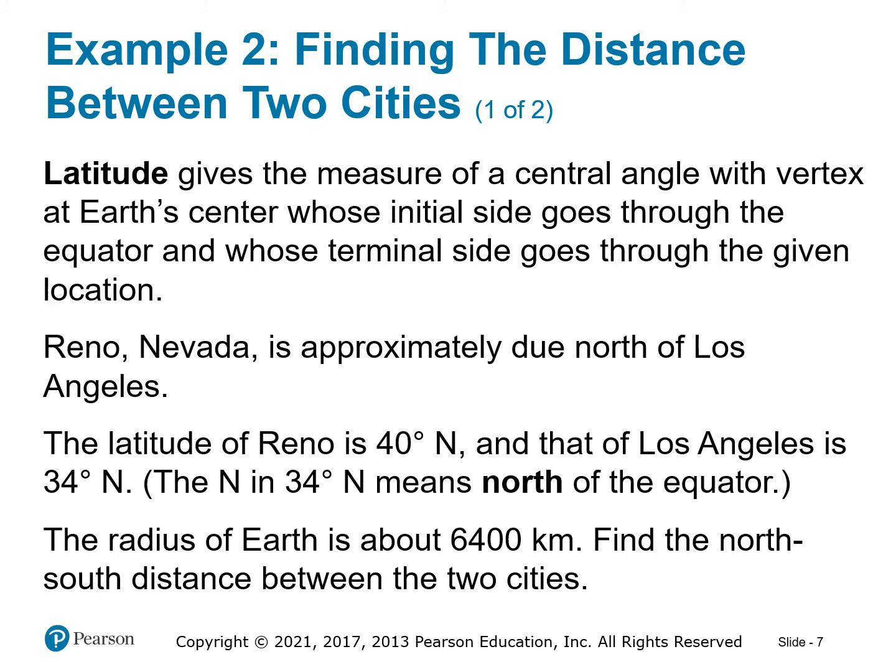An interesting application: latitude gives the measure of a central angle with vertex at the earth's center, with initial side through the equator and terminal side through a given location. Reno, Nevada is approximately due north of Los Angeles — Reno's latitude is 40 degrees north and Los Angeles is 34 degrees north. The radius of the earth is approximately 6400 kilometers.